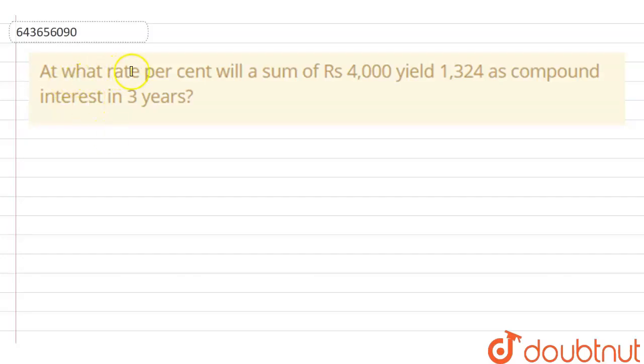Here the question is at what rate percent will a sum of rupees 4000 yield 1324 as compound interest in three years.